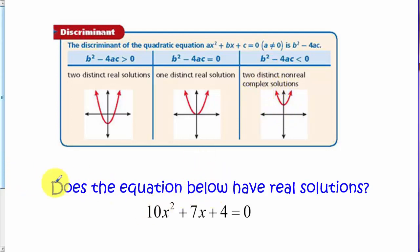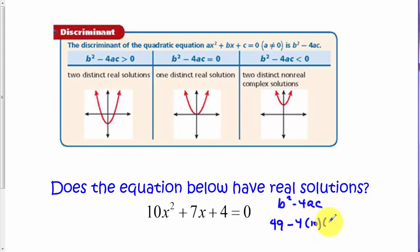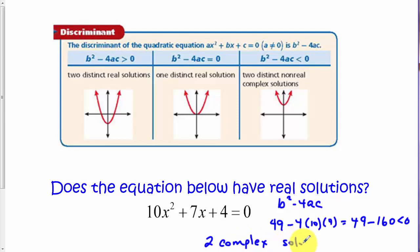Applying that rule to our next problem: we calculate the discriminant, b squared minus 4ac. Here b squared is 49, minus 4 times 10 times 4, which is 160. So we have 49 minus 160, which is negative. This equation does not have any real solutions — it has two complex solutions. If this were a function, we'd know from the discriminant alone that its graph would have no x-intercepts; it would sit above the x-axis since the a value is positive and the parabola opens upward.